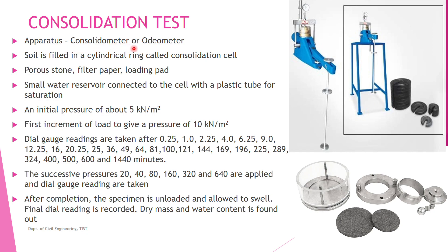The apparatus is called a consolidometer or oedometer. It has a consolidation cell and soil is filled in this cell in paste form. On the top and bottom we place filter paper and porous stone, and on top of that setup we keep the loading pad. So: porous stone, filter paper, soil, filter paper, porous stone, then the loading pad. This setup is kept on the apparatus for loading.